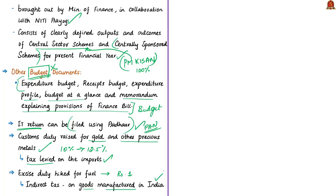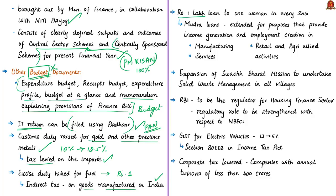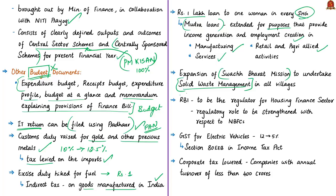The budget has announced that a ₹1 lakh loan will be given under the MUDRA scheme to one woman in every self-help group. MUDRA loans are extended for a variety of purposes providing income generation and employment creation in manufacturing, services, retail, and agriculture-allied activities. The Swachh Bharat Mission has also been expanded to undertake solid waste management in all villages.